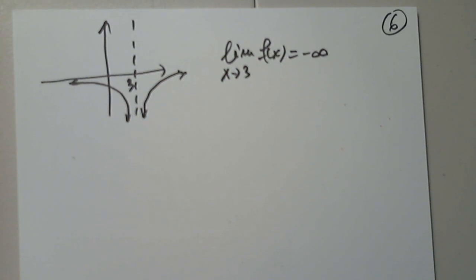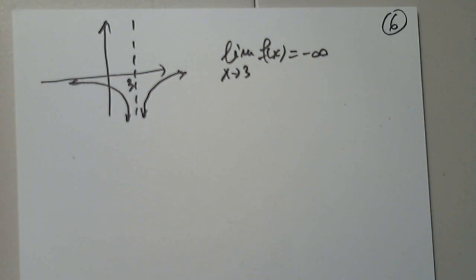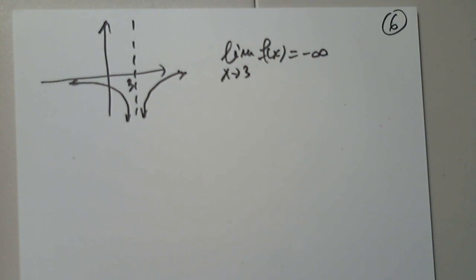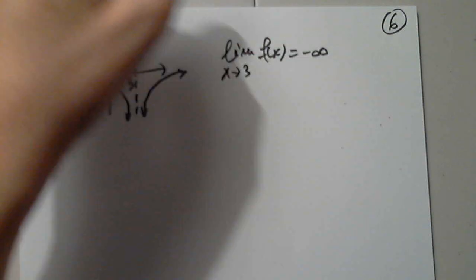There are two different operators. This is the operator called evaluate. This is the operator called tendency, trend. How much is f of four? It's an open point — undefined because it's an open point.